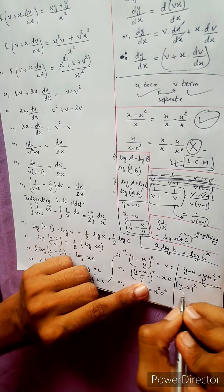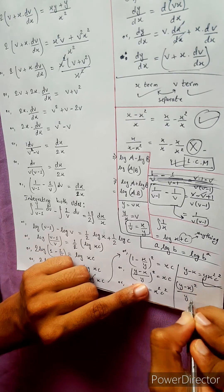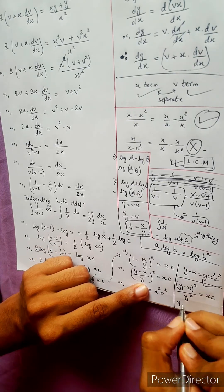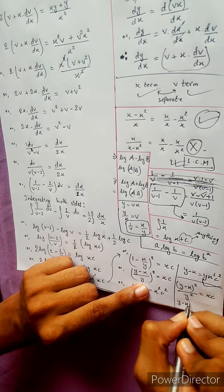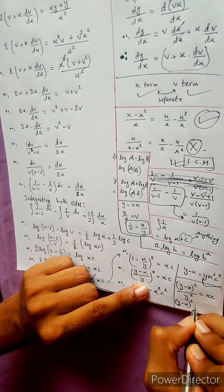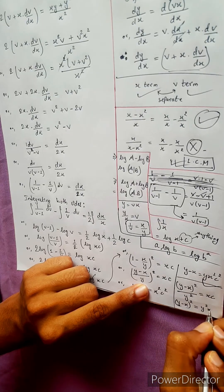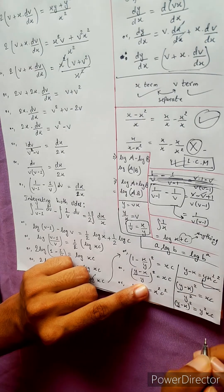The final answer: (y minus x) squared equals y squared times xc.